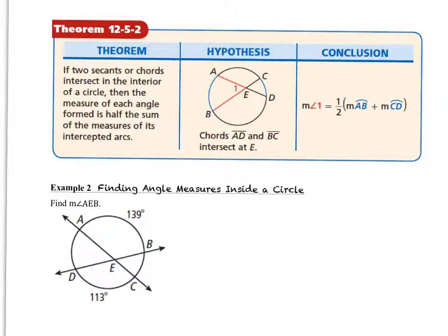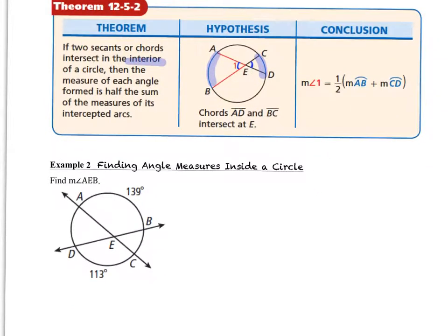This brings us to theorem 12-5-2, which says: if two secants or chords intersect in the interior of a circle, then the measure of each angle formed is half the sum of the measures of the intercepted arcs. Angle one and its vertical angle will have the same congruent measurement. We find the measure of angle one by finding half the sum of the measures of arcs AB and CD.